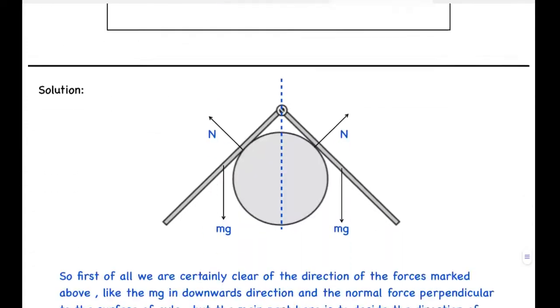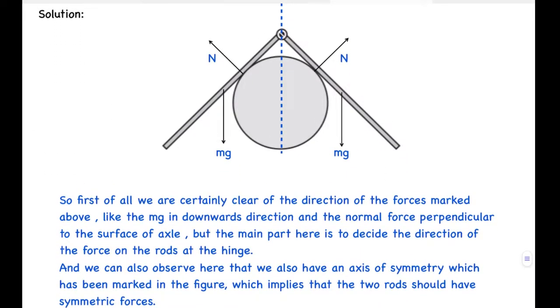Now let's look at the solution. First of all, we are certainly clear of the direction of the forces marked above, like mg in the downward direction and normal force perpendicular to the surface of the axis. But the main part here is to decide the direction of the force on the rods at the hinge. This is the hinge here.